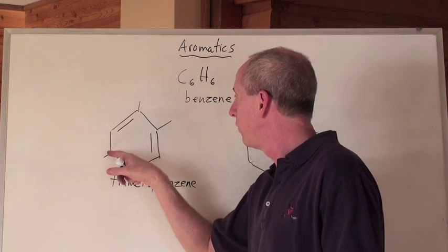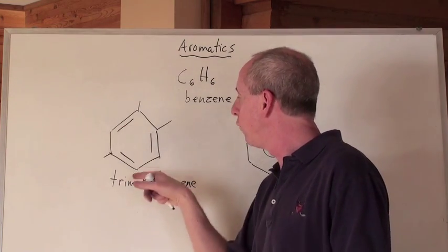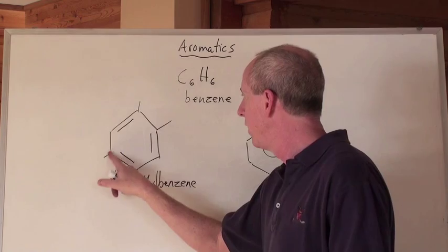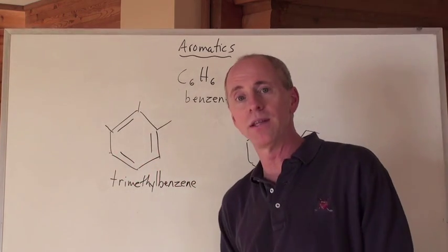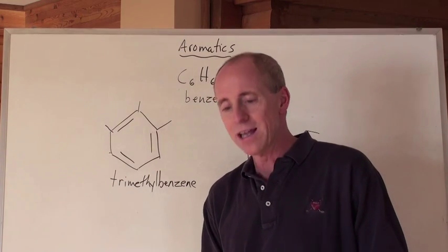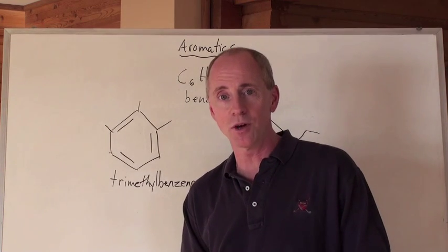That sounds like the lowest numbers possible. One, two, and four. And then starting here, if you went one, three, four, that still wouldn't be the lowest. So, 1,2,4-trimethylbenzene for that one. And this one would be 1,2,3-trimethylbenzene.